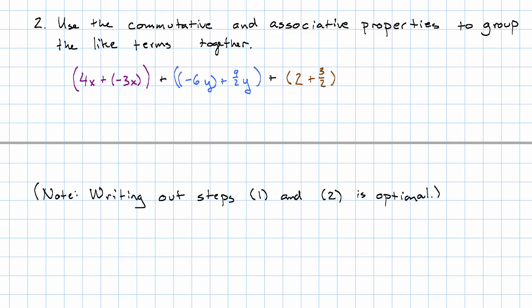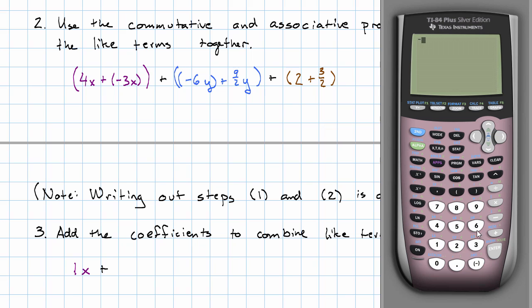Now we combine like terms. So what do we get? We get 4 plus negative 3 is 1, negative 6 plus 9 halves, I'm going to use my calculator for that again, negative 6 plus 9 halves. Let's make that a fraction. We get negative 3 halves y. And then 2 plus 3 halves. Let's make that a fraction as well. So 7 halves.